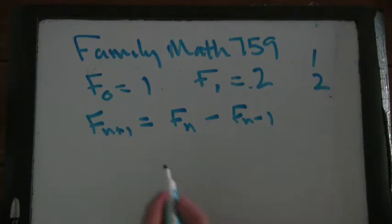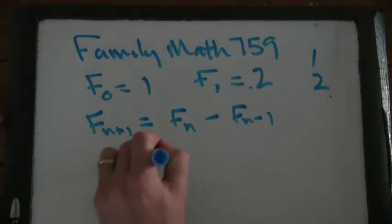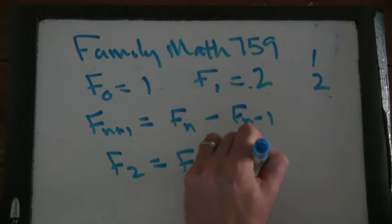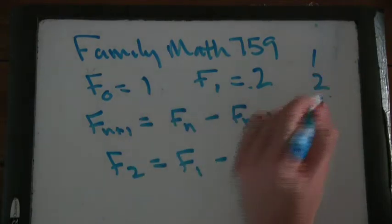Yeah, so we have to be careful what we're subtracting. So f of 2 is f of 1 minus f of 0, so. Okay. Okay. Cool.